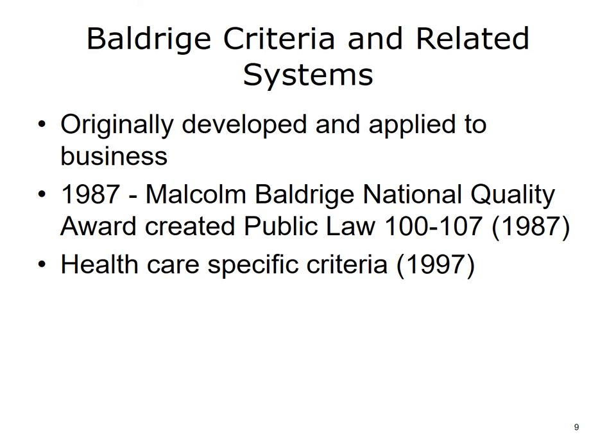Like so many quality improvement methods, the Baldrige criteria were originally developed and applied to business. In 1987, the Malcolm Baldrige National Quality Award was created by Public Law 100-107. In 1997, healthcare-specific criteria were added, focused on core competencies, new technology implementation, sharing of electronic information, cost reduction, and alliances with other healthcare providers. These were organized into seven interdependent categories: Leadership, Strategic Planning, Focus on Patients, Other Customers and Markets, Measurement, Analysis and Knowledge Management, Staff Focus, and Process Management and Organizational Performance.